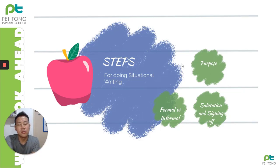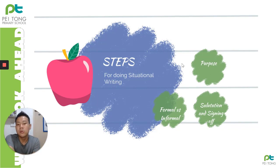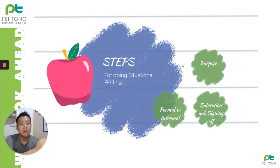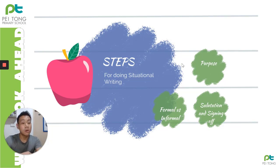The first step is to identify the purpose. The purpose is very important and it is always found in the question stem. In the question itself, you need to highlight the purpose — why are you writing to this person? Then ask yourself: is this a formal or informal letter? Are you writing to a friend, someone you do not know, an authority figure, or an adult? That will naturally lead to your salutation and signing off.